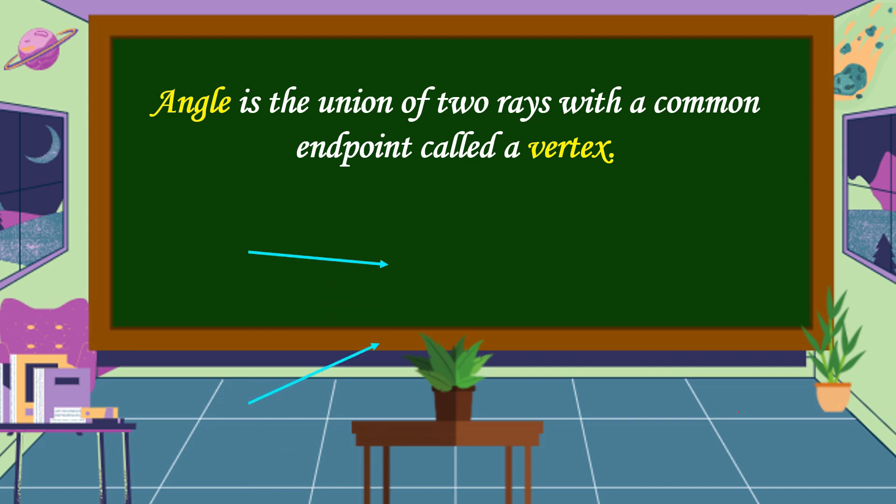This is an example of an angle. The parts of an angle are ray 1, ray 2, and a vertex.